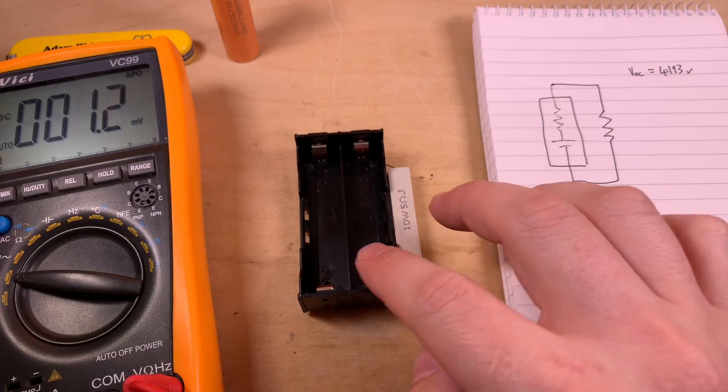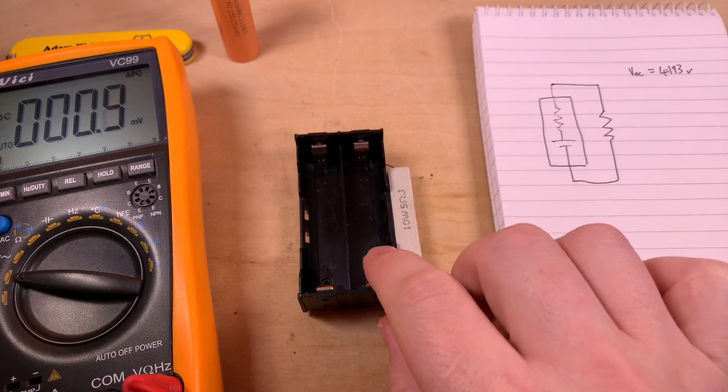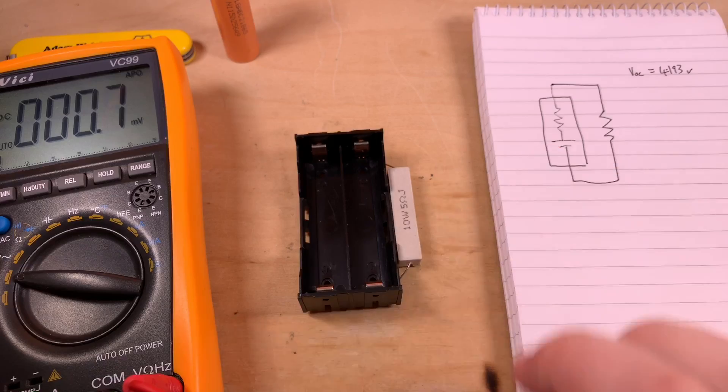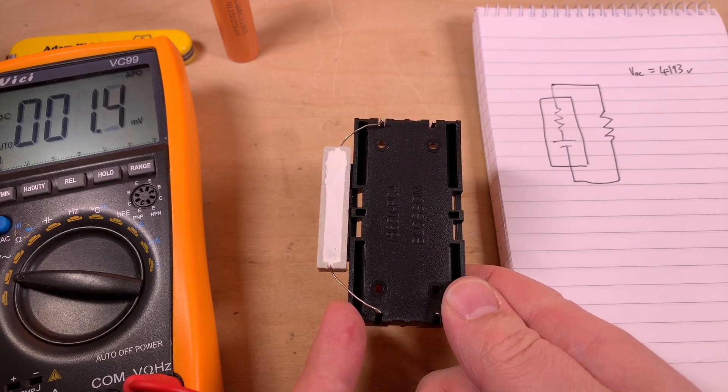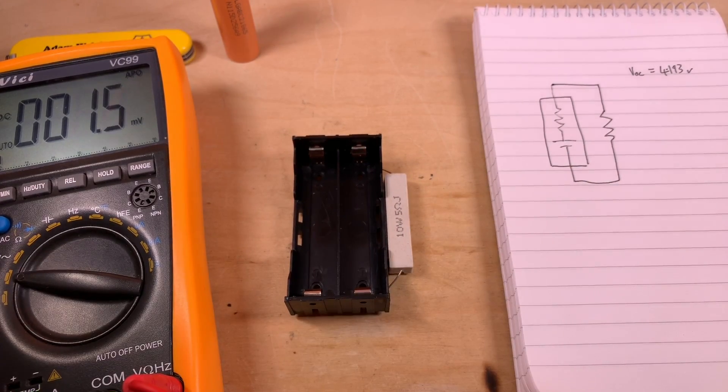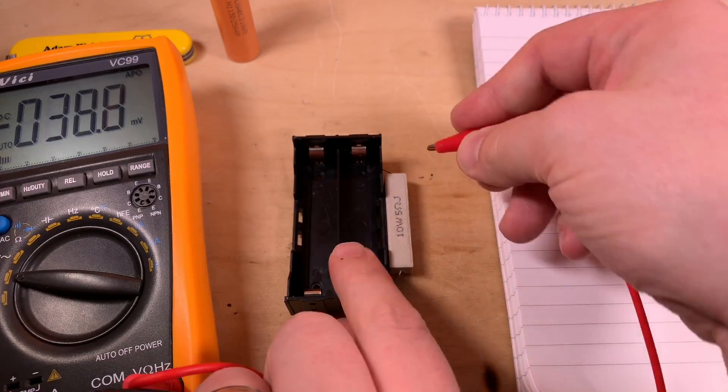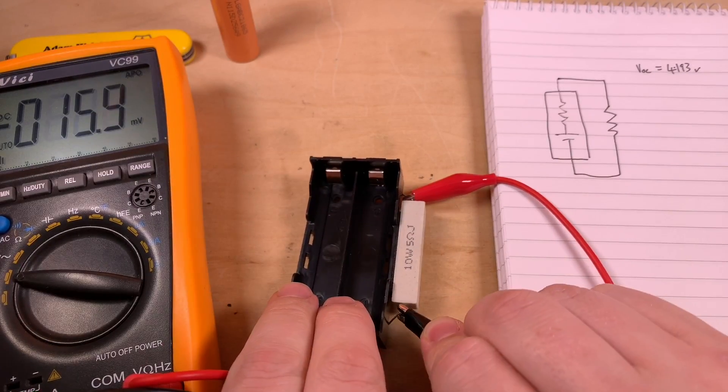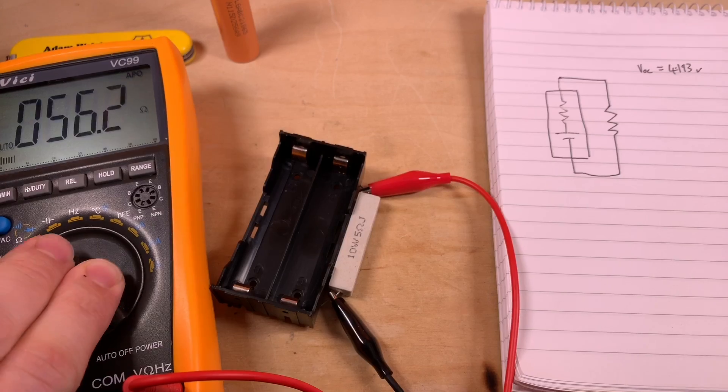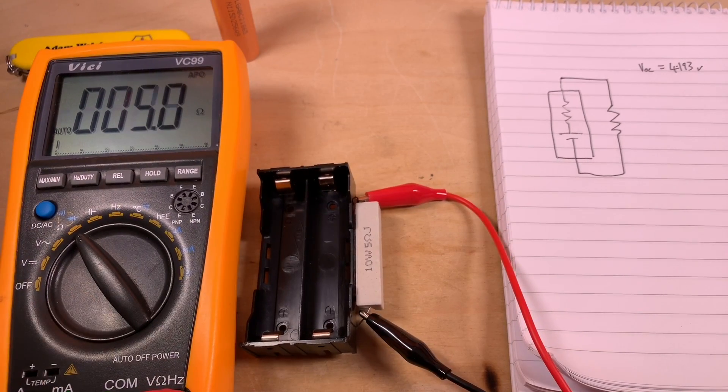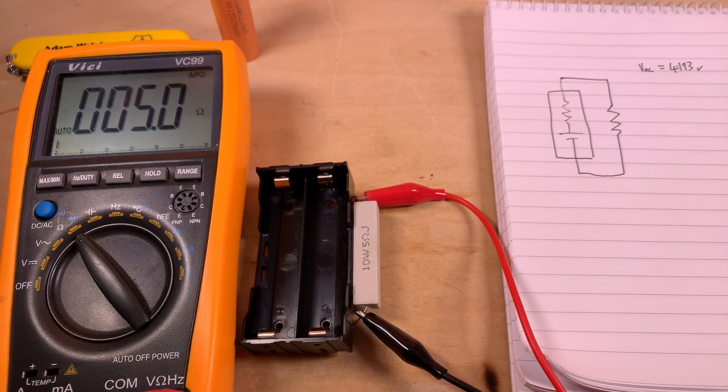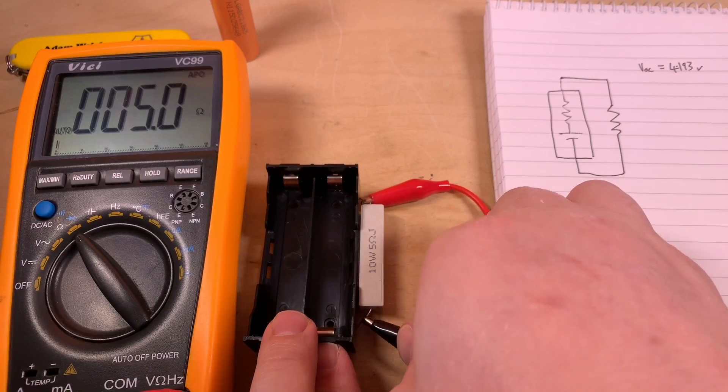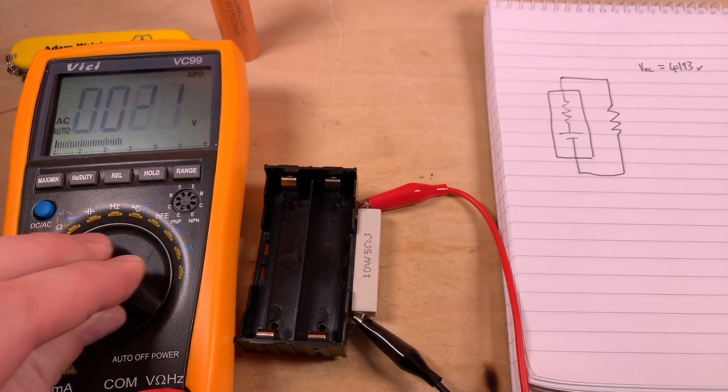I've built up this little test rig here. It's a dual holder but I'm only using one side, and as you can see I have a power resistor, a 10 watt 5 ohm resistor, and that is connected across what will be the positive and negative of the cell once I plug that in. So we have a known resistor here, 5 ohms, but let's just check that first. The Vicky is saying yes, exactly 5 ohms, so we'll take the 5 ohm resistance value.